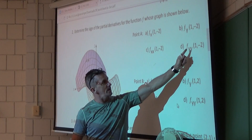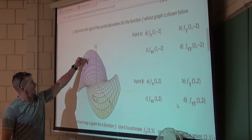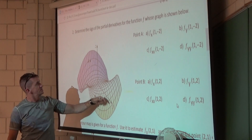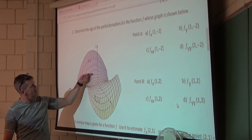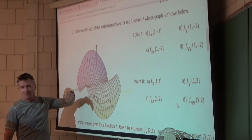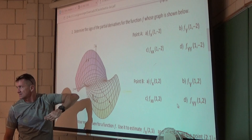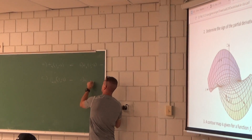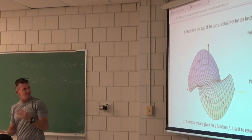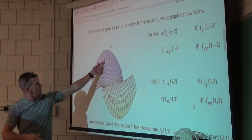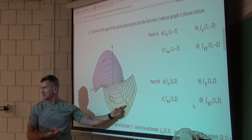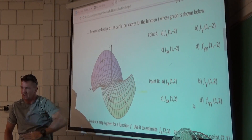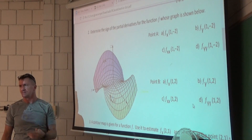Now one more for this problem — what about fyy? We need to think about whether the slopes increase or decrease as you move in the direction of the positive y-axis. Looking at this, is it concave up or concave down? It looks concave up, like a cup — so fyy would be positive. You can use the rulings to help you see if you're moving in the direction of the positive y-axis.